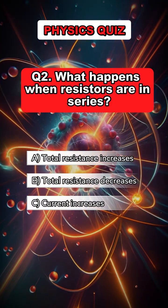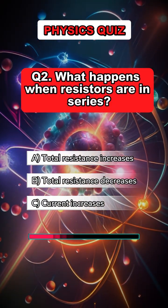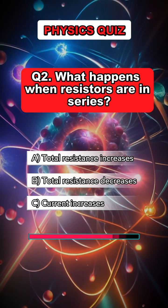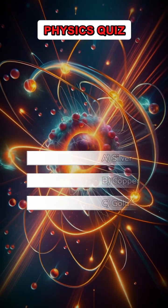Question 2. What happens when resistors are in series? Answer. A. Total resistance increases.